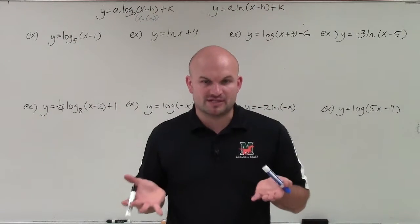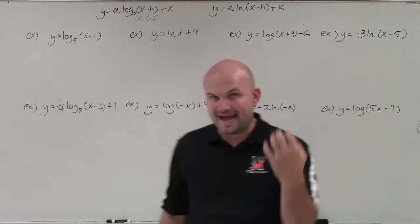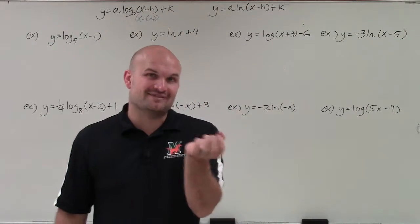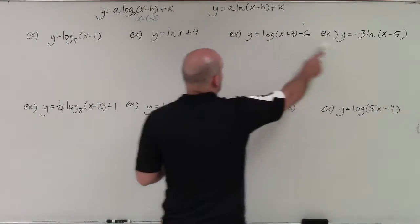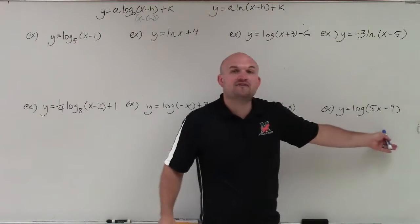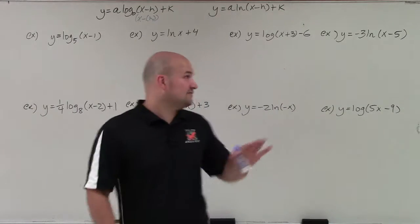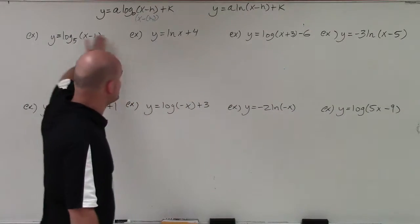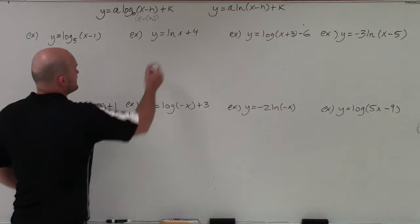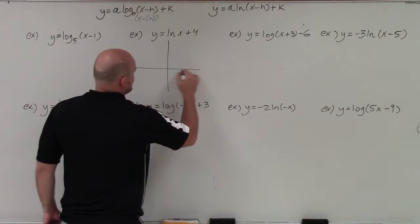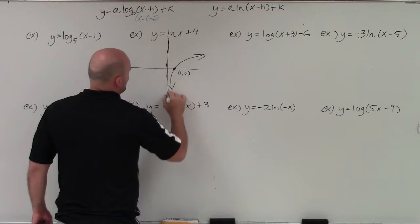When we're graphing multiple transformations, the main important thing we want to do is graph our parent graph. Our parent graph is always going to have an x-intercept as long as the coefficient of our x is 1, which we have in the case of all of these except for our final last problem. Since all of the rest have an x with a coefficient of 1 or negative 1 (just a reflection), the parent graph is going to look somewhat like this — with 1 comma 0 and a nice little vertical asymptote.